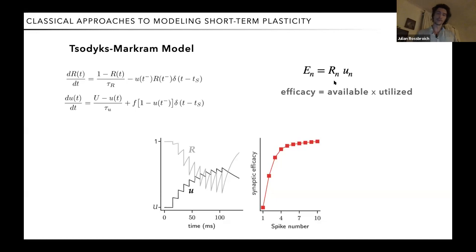So in other words, the available resources correspond to something like the available vesicle pool and the utilized resources to the release probability. And then as we have a presynaptic spike train, the available efficacy at each spike will go down and then recover again, and the release probability after each spike will go up. And then this product of the two, depending how you fit the parameters that go into these two differential equations, you can describe facilitating synapses and depressing synapses and a combination of the two.